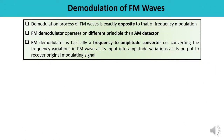Let us talk about the demodulation of FM waves. The demodulation process of FM waves is exactly opposite to the operation of frequency modulation. An FM demodulator operates on an entirely different principle compared to the AM detector. AM detectors or demodulators are basically a rectifier, but an FM demodulator is basically a frequency-to-amplitude converter, where frequency variations are converted into amplitude variations.